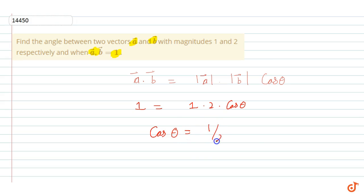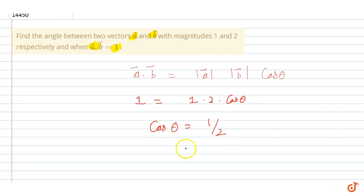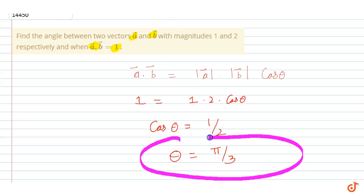1 by 2. And cos theta is equal to pi by 3, so theta is equal to pi by 3. So the angle between a vector and b vector is: angle is equal to pi by 3. This is the answer for this question.